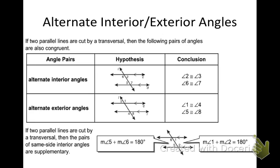We talked about corresponding angles so far. Now we're going to talk about alternate interior and alternate exterior. If two parallel lines are cut by a transversal, then alternate interior angles are also congruent, and alternate exterior angles are also congruent. So corresponding, alternate interior, and alternate exterior — if the lines are parallel, those angles are always going to be congruent.